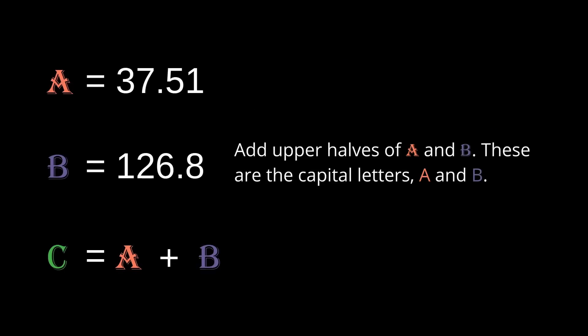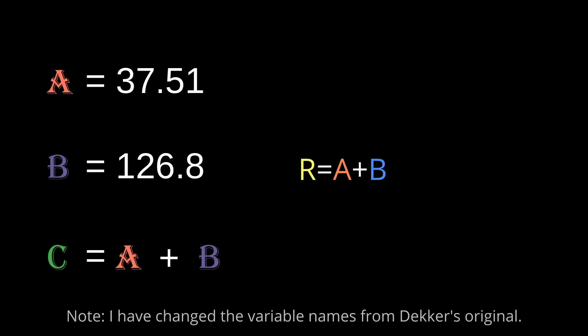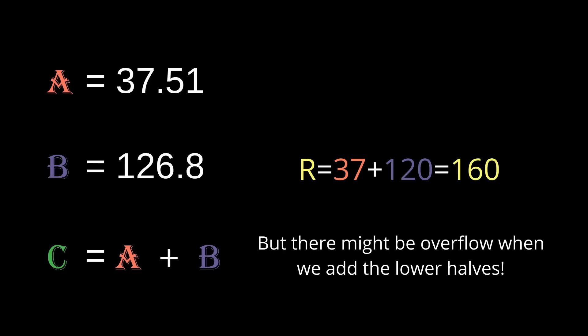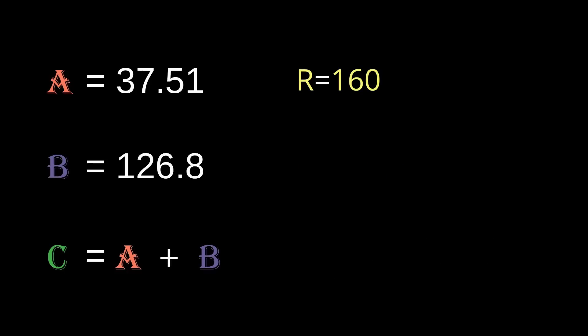The first step in Dekker's addition process is to compute R, which is the addition of the upper halves of our double-doubles. Capital R equals capital A plus capital B, which is 37 plus 120. And if we sum those two together, you'll find that the answer is 157, but since we're using only a little two-digit system, we can't actually store 157, and that has to be rounded to the nearest two digits. Capital R just here is going to become 160.